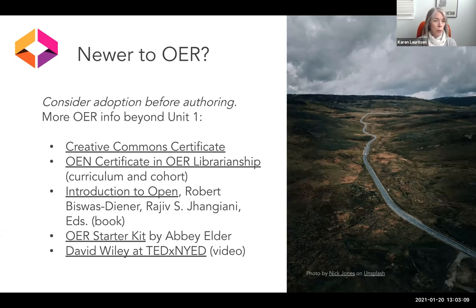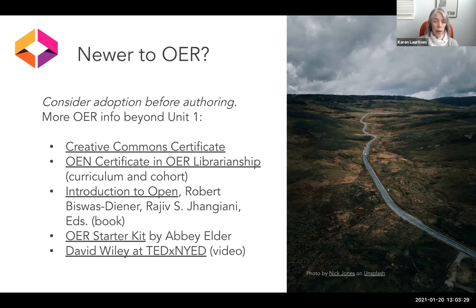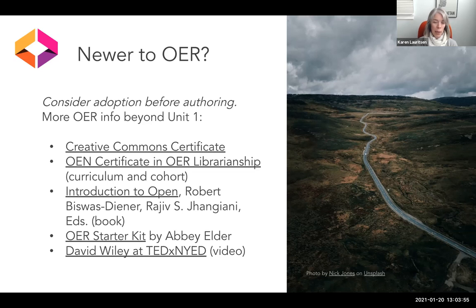If you're looking for more information about OER beyond what you saw in Unit 1, you could think about, for example, the Creative Commons certificate, which focuses on understanding copyright and Creative Commons licenses. You could consider joining the certificate in OER librarianship offered through the OEN. There is a curriculum that is freely available online as well as a cohort experience where you work in mentor groups to develop an action plan for OER at your institution with a lot of support. You may also prefer to read a book — you could check out Introduction to Open, edited by Robert Biswas-Diner and Rajiv Jagiani, or maybe a starter kit. There's one put together by Abby Elder.